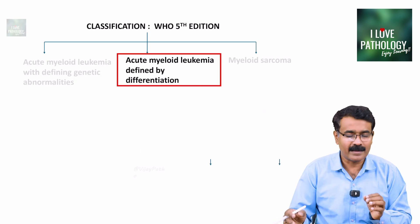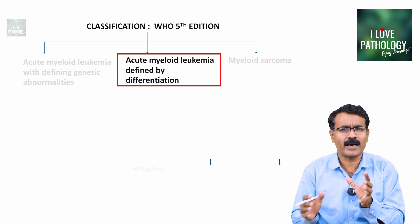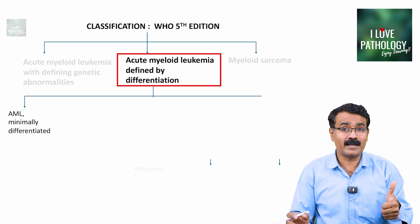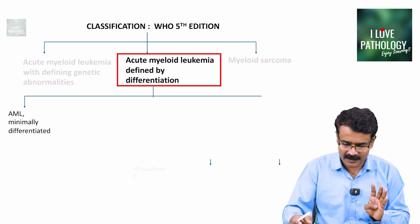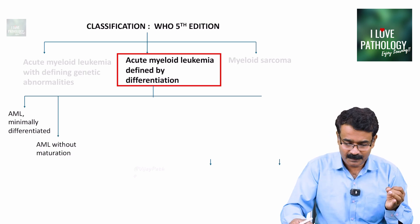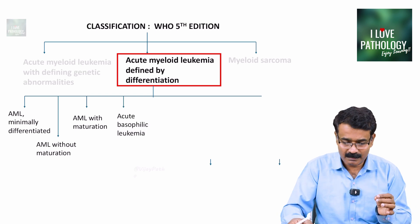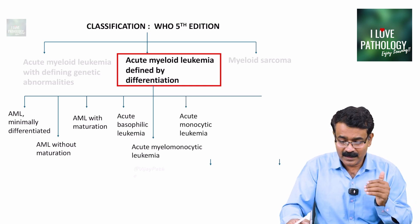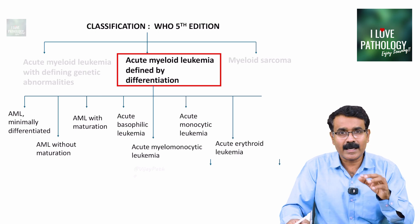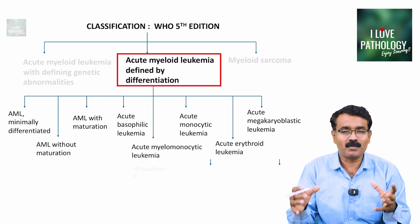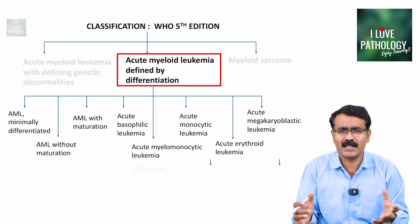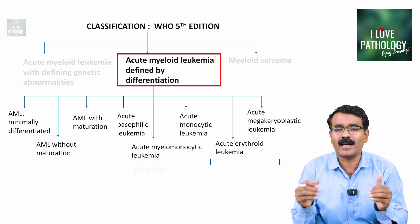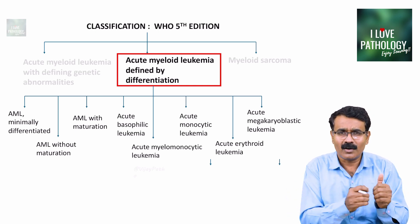Moving on to the second category — AML defined by differentiation, which you can appreciate morphologically by looking at the peripheral smear and the bone marrow. The subcategories are: AML minimally differentiated, AML without maturation, AML with maturation, acute basophilic leukemia, acute myelomonocytic leukemia, acute monocytic leukemia, acute erythroid leukemia, and acute megakaryoblastic leukemia. This is essentially like the FAB classification but under AML defined by differentiation.